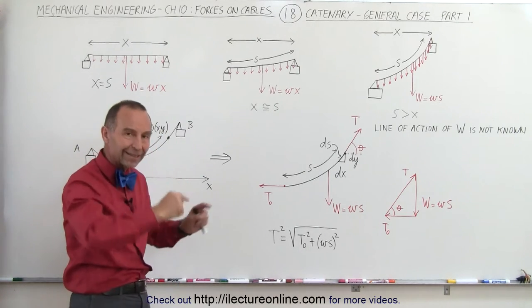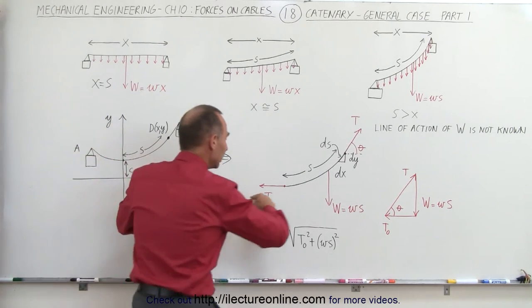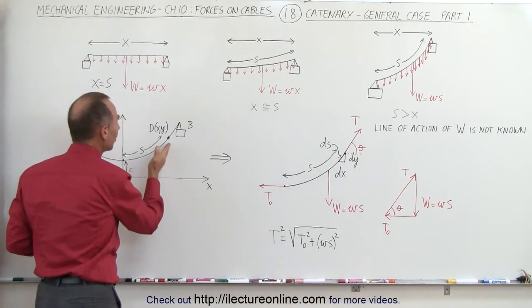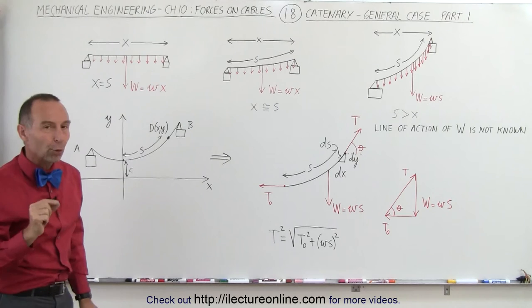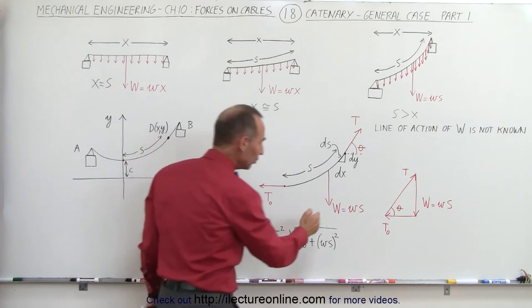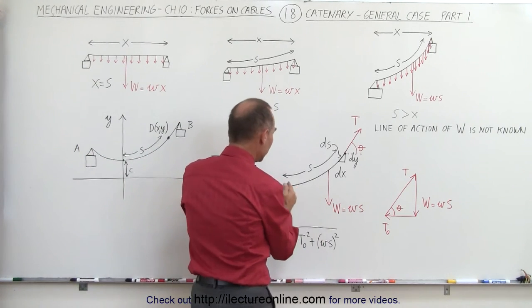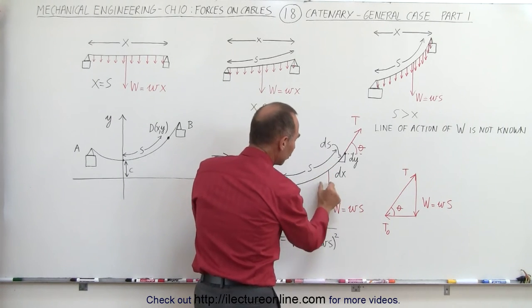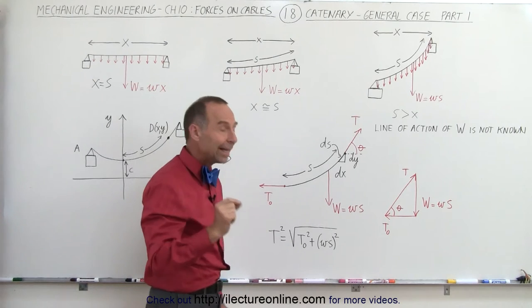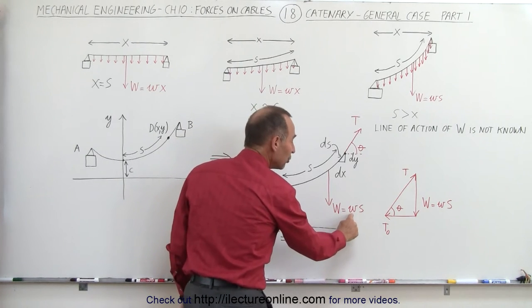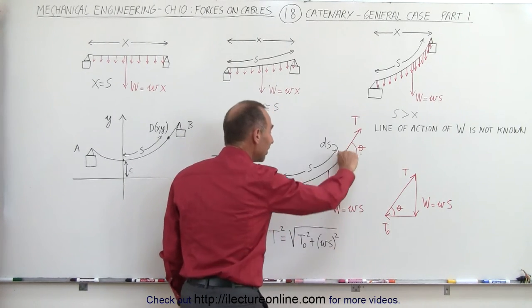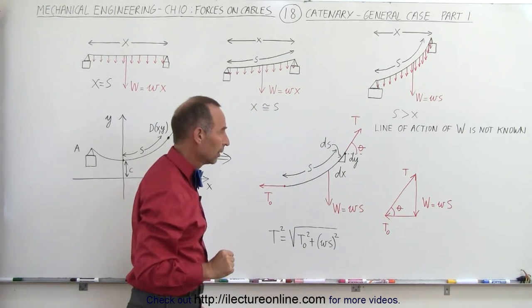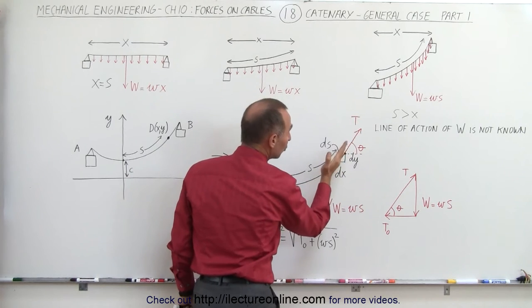The tension will increase as you get closer to the endpoints and as the angle relative to the horizontal increases. The total weight of the cable — again notice that point will be to the right of the middle — is equal to the weight per unit length ω times the arc length s of the cable.